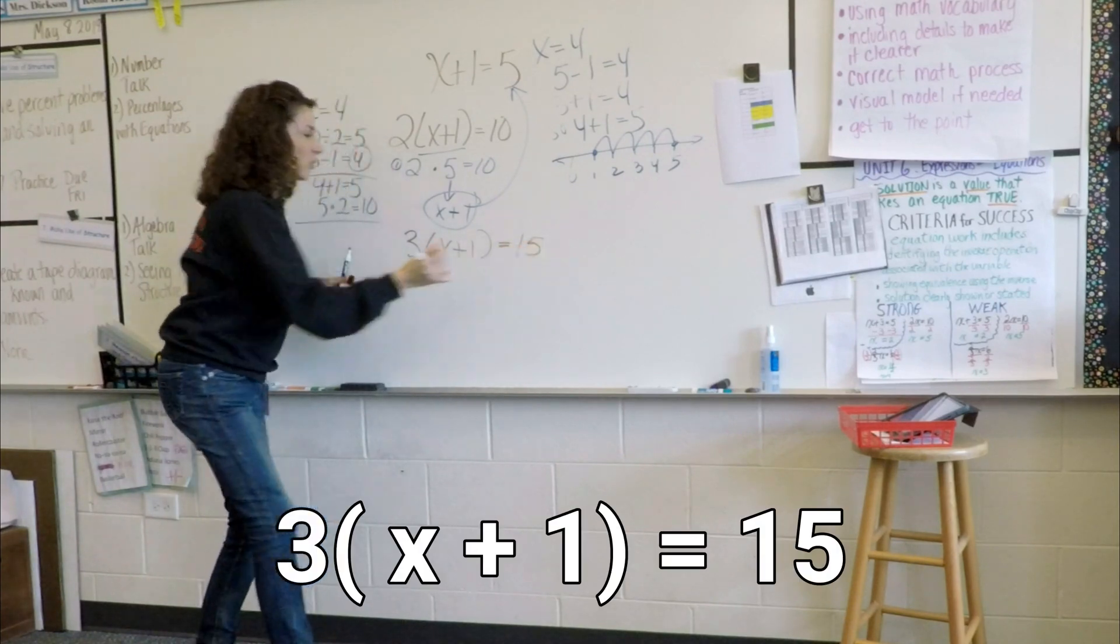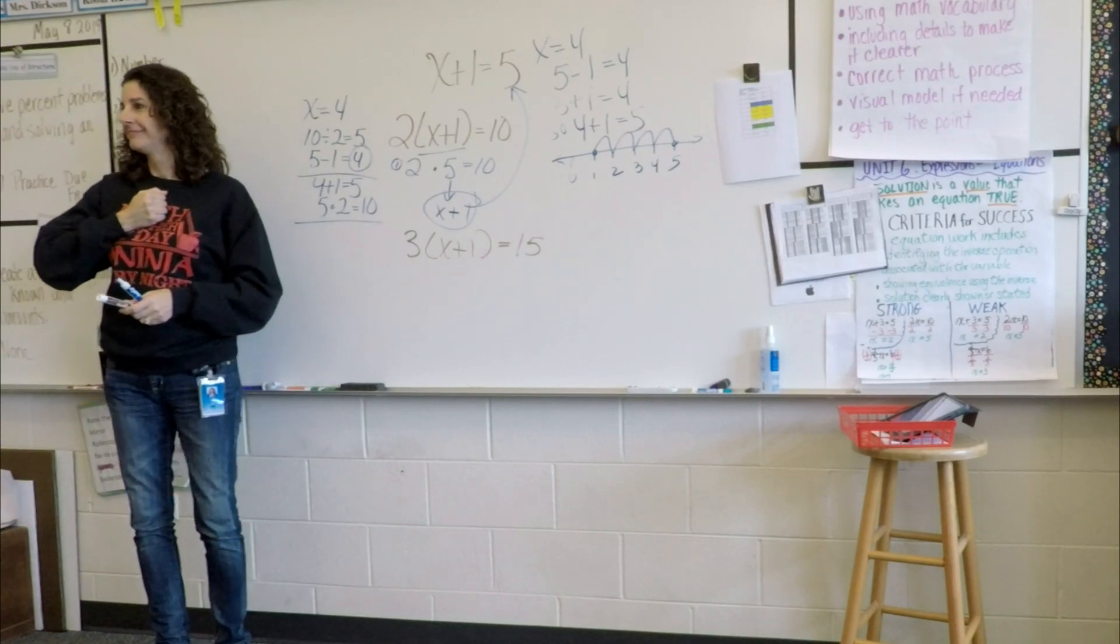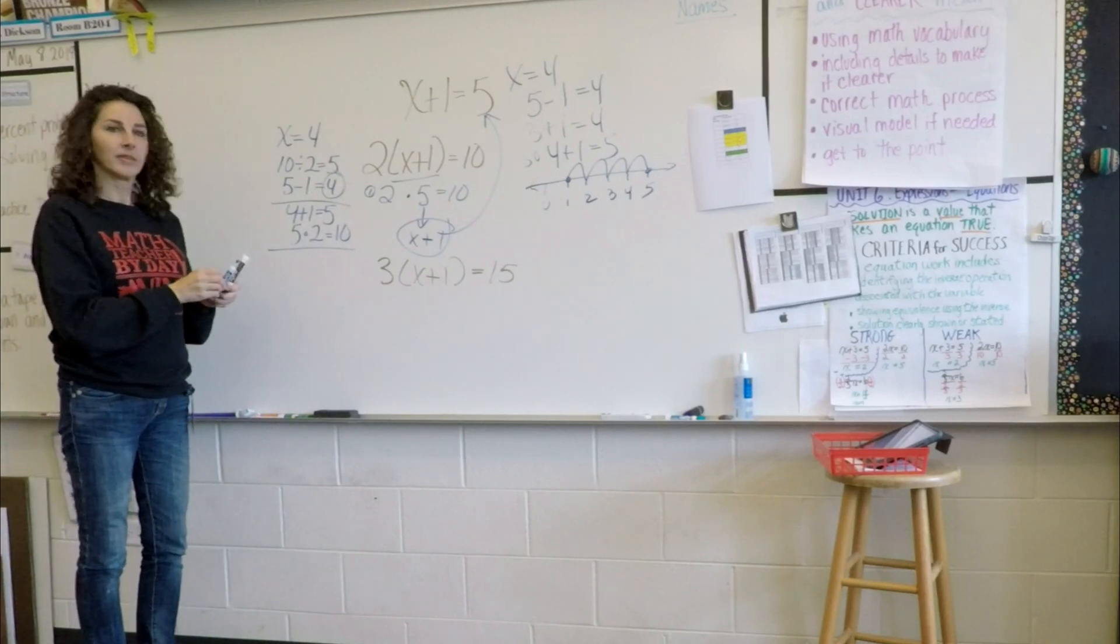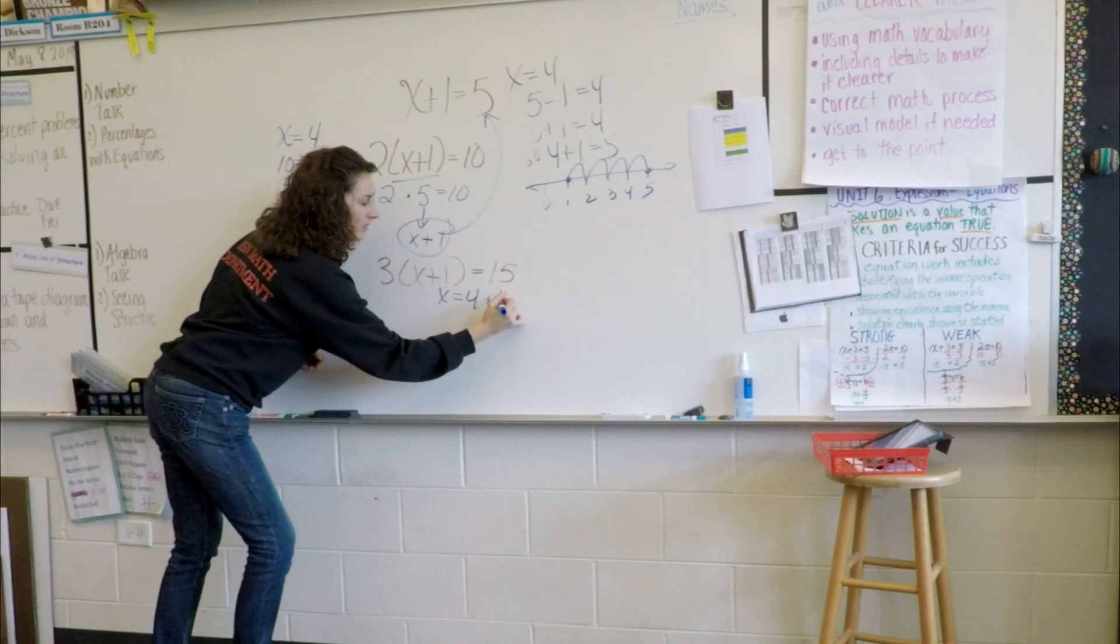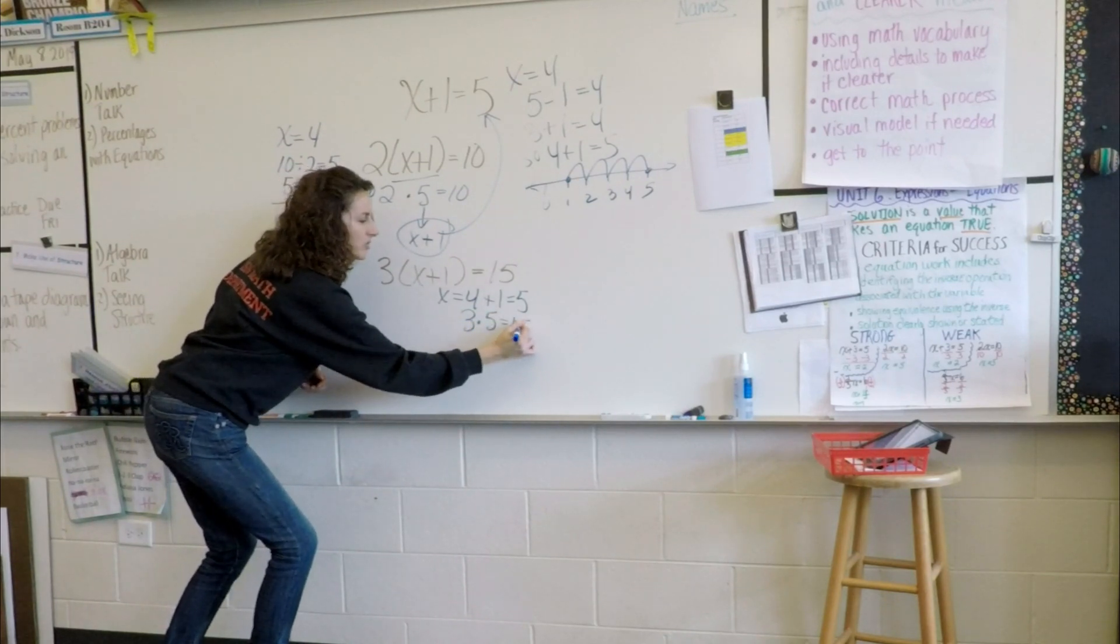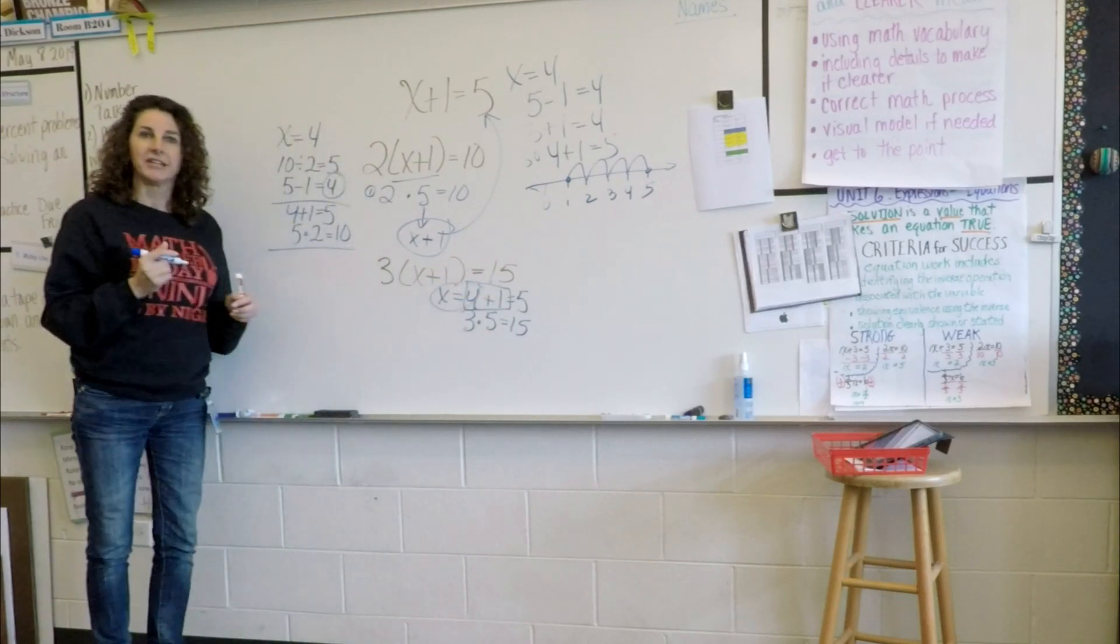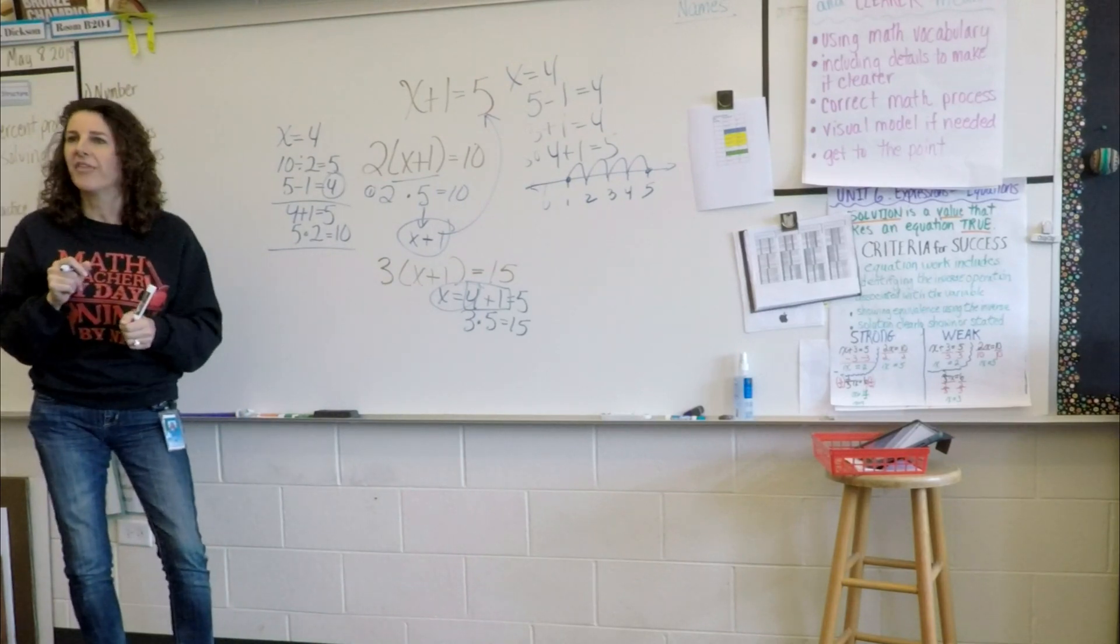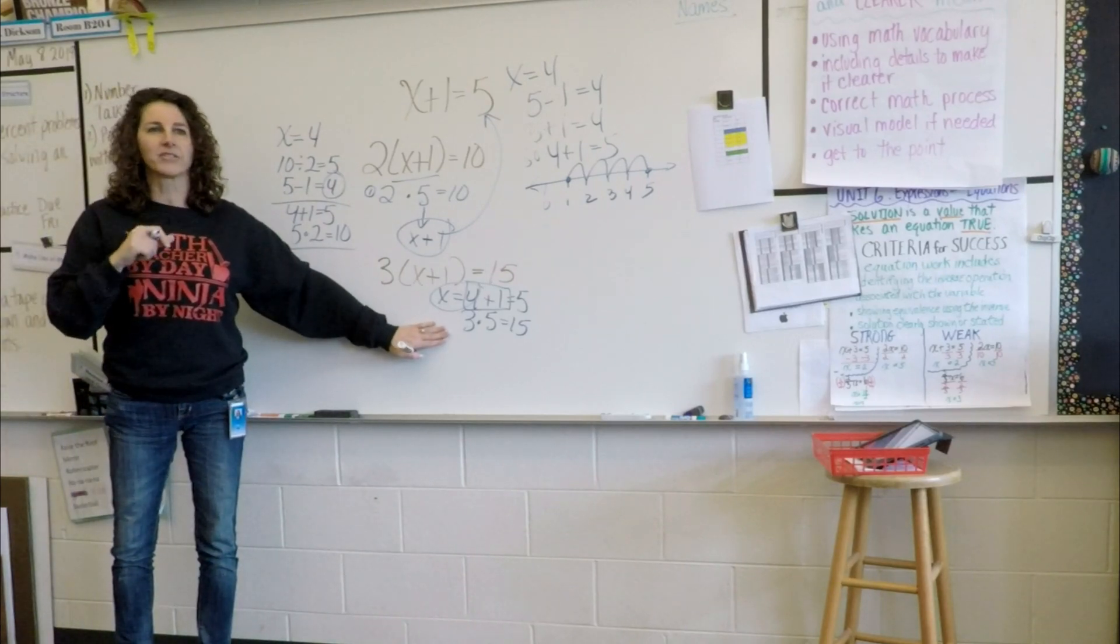3 times the quantity X plus 1 equals 15. Fist to chest. I'm hearing some mutterings. X is 4 and 4 plus 1 is 5 and 3 times 5 is 15. I'm just going to repeat. You said X is 4 because 4 plus 1 equals 5 and then 3 times 5 is 15. Excellent. I heard some people muttering too. It's the same thing.